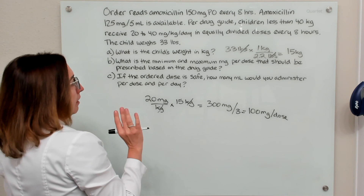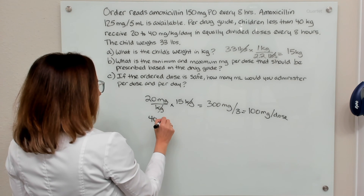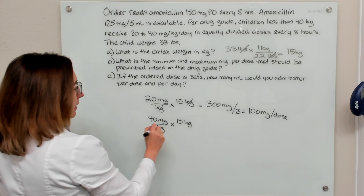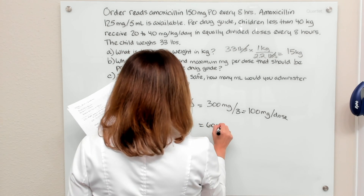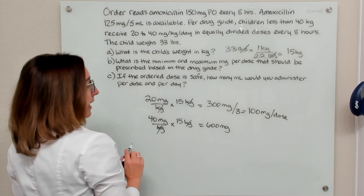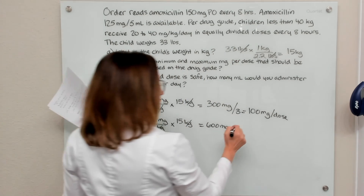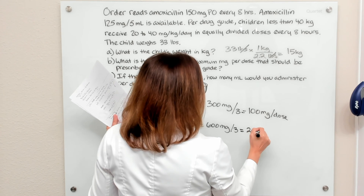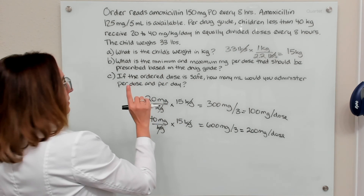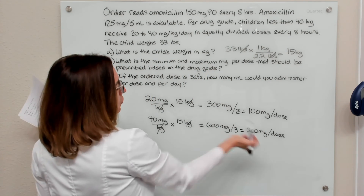The maximum per the drug guide is 40 milligrams per kilogram per day. Multiplying by our patient's weight of 15 kilograms gives 600 milligrams per day — the most our patient should get per day. Since we're dividing that into three doses per day every eight hours, we divide by three, and that gives us 200 milligrams per dose as the maximum. So the answer to part B: 100 milligrams is the minimum and 200 milligrams is the maximum per dose.